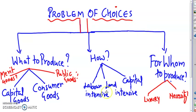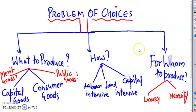If the answers to these questions are by the command of the government — if government decides what to produce, how to produce, for whom to produce — we call it a planned economic system. If the market forces of demand and supply answer these questions, we call it a free market economic system. And if an economy has a mix of both, where part is decided by the government and part by buyers and sellers, we call it a mixed economic system. Most of the economies are mixed economies now.